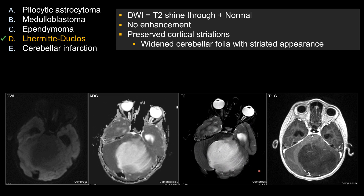Another key feature of Lhermitte-Duclos is that, despite the size of the lesion or the mass effect, you see lots of areas with preserved cortical striation — a whitened cerebellar folia with this preserved striated appearance. That would be a very strange appearance for other types of tumor, like pilocytic astrocytoma or medulloblastoma, which tend to completely take over and efface the cerebellar folia. So if you see lots of preservation of striation with a large lesion and mass effect, Lhermitte-Duclos is a pretty good bet.